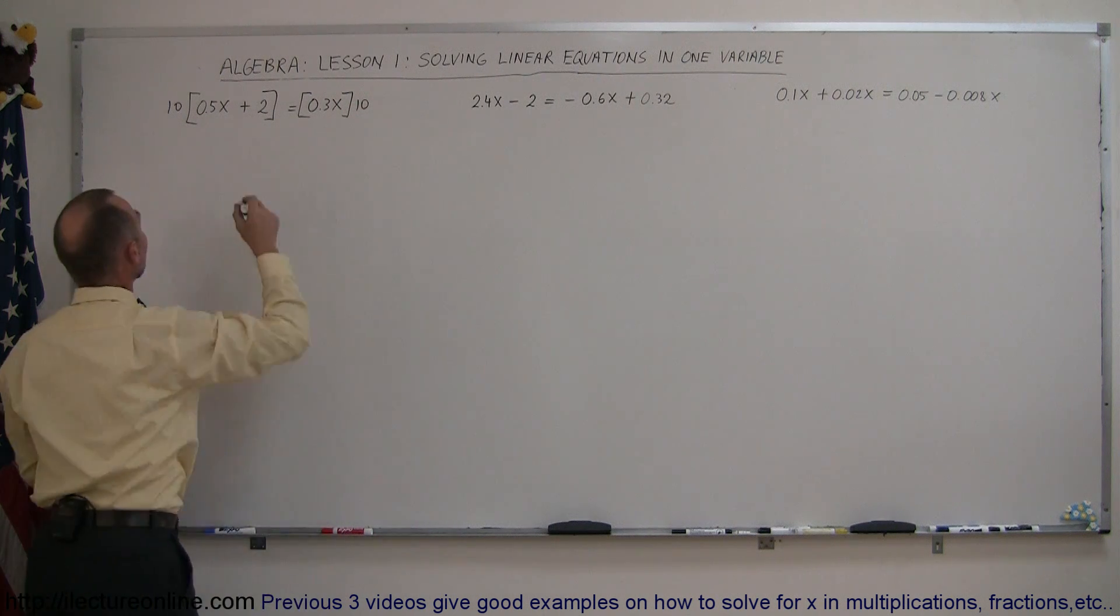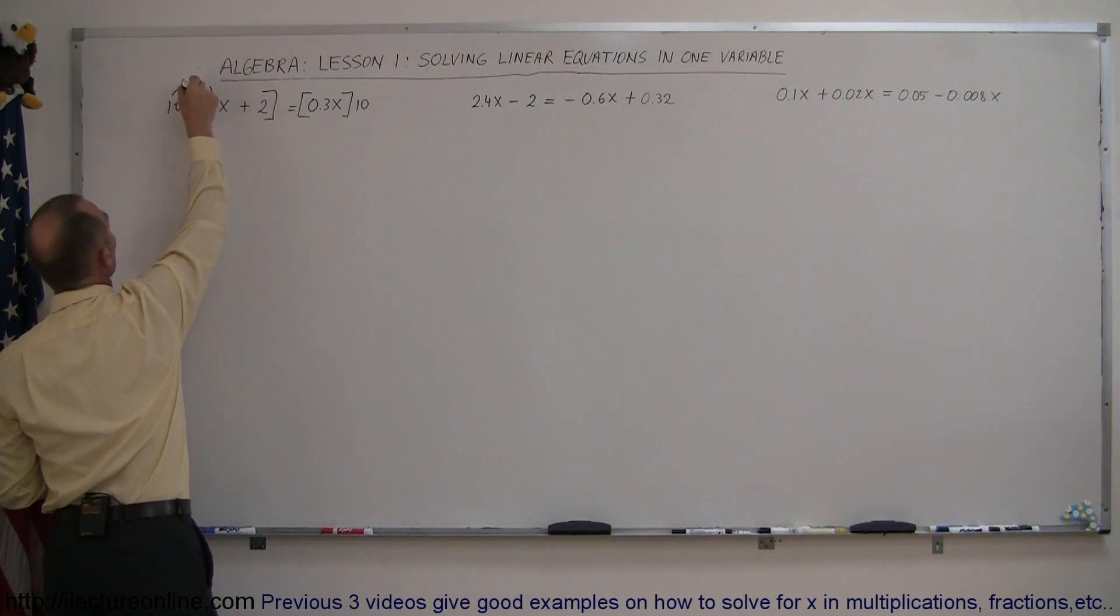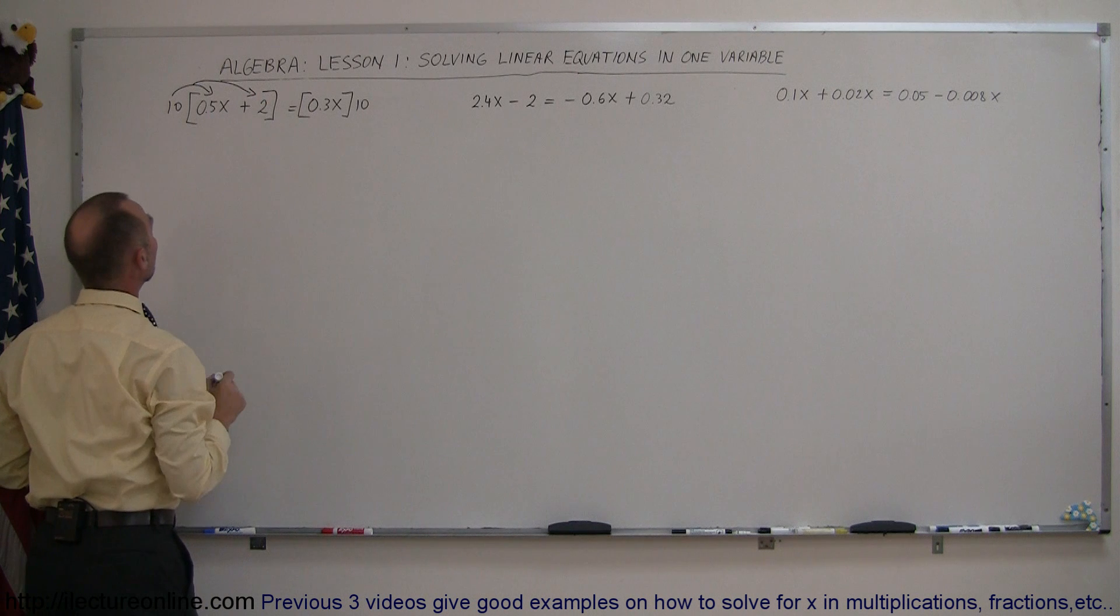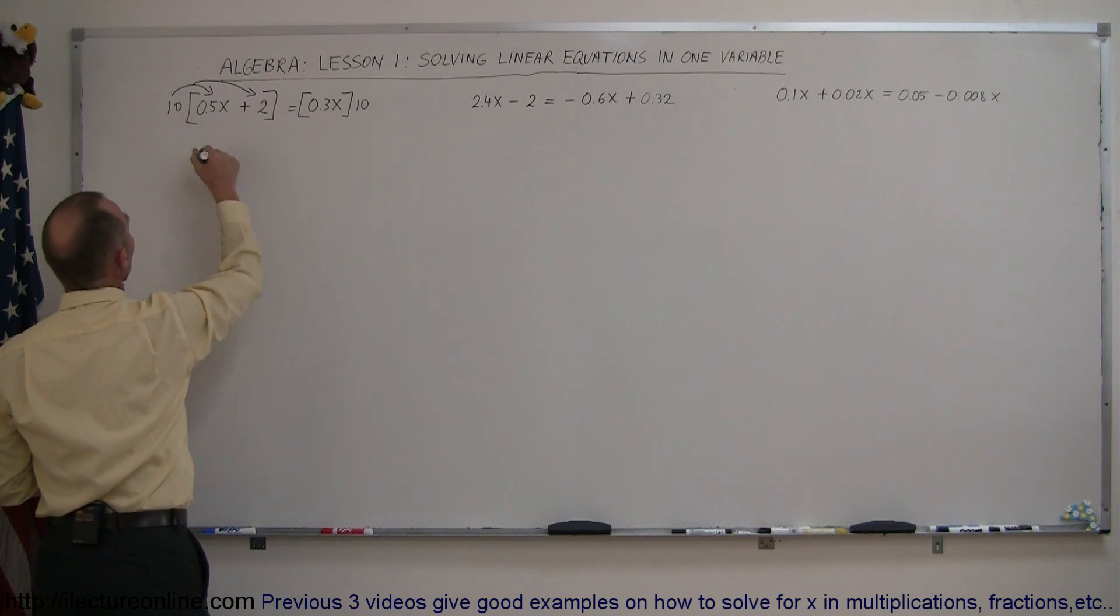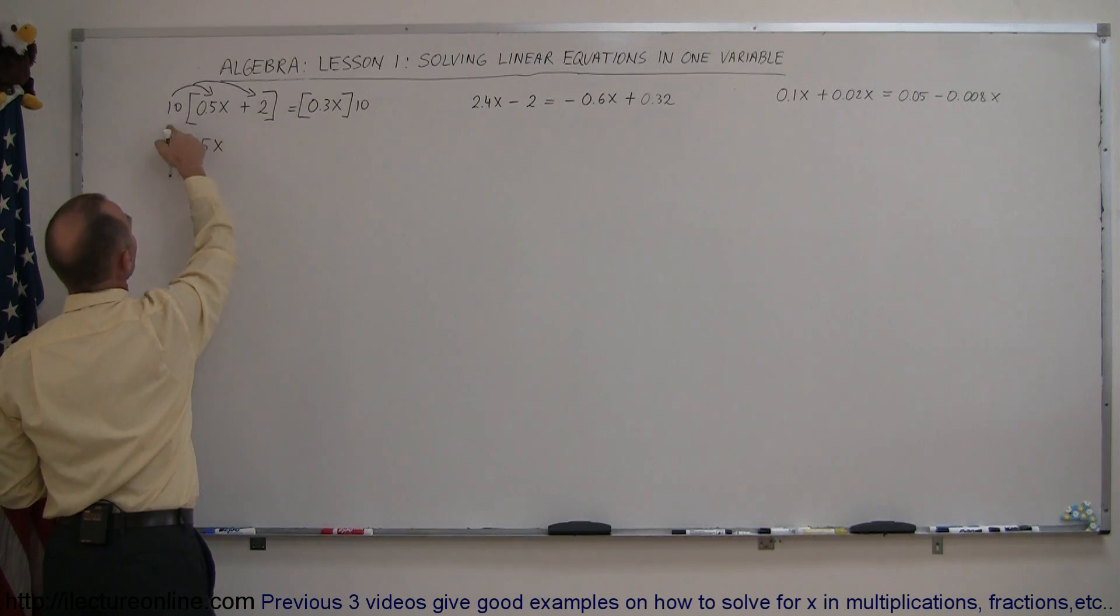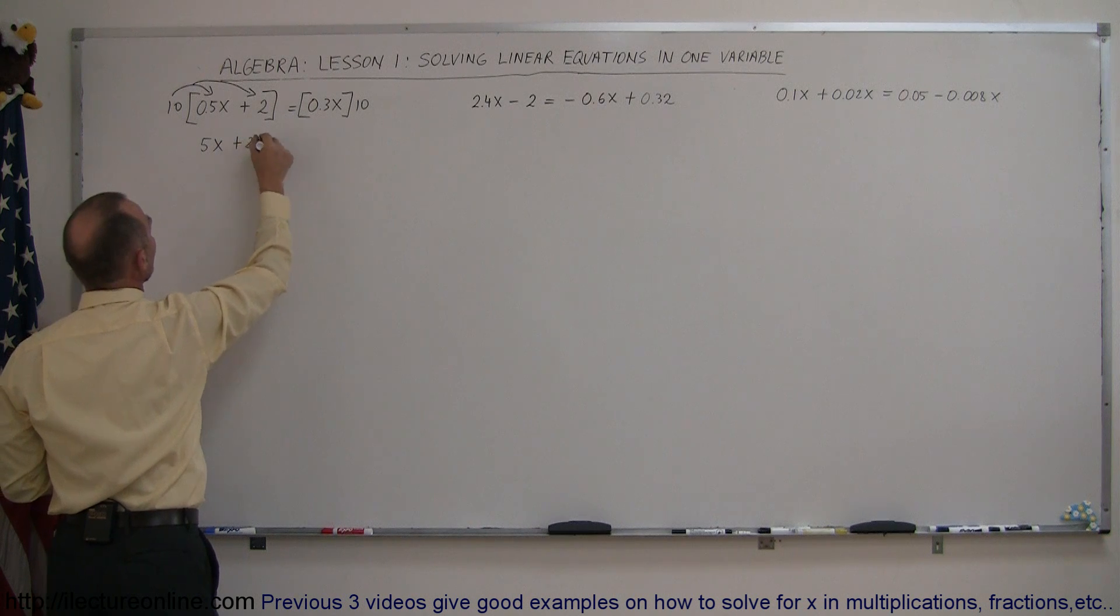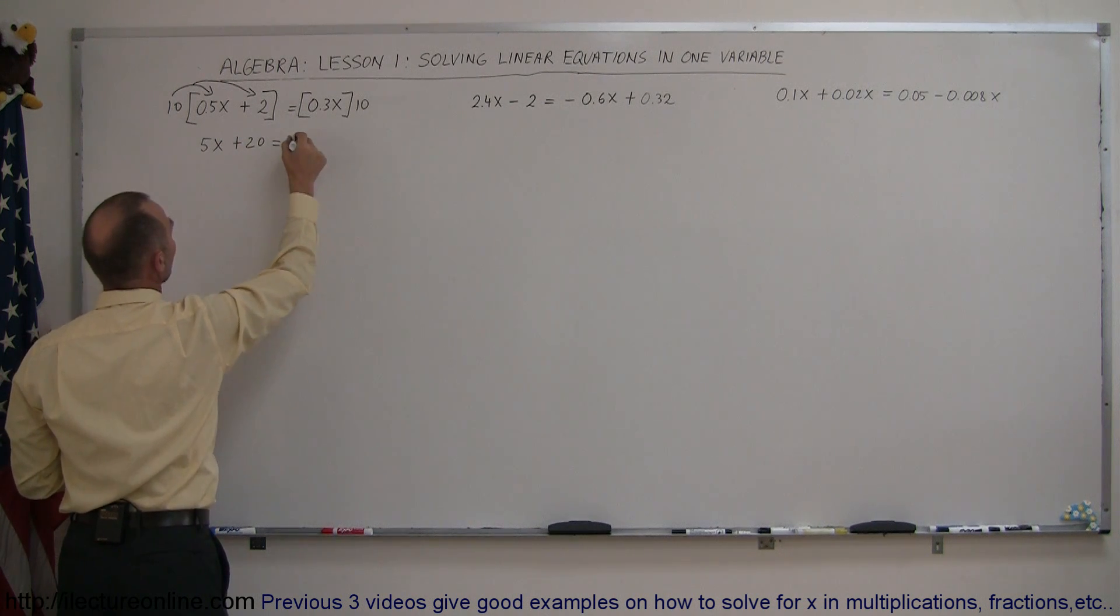So when we do that, the 10 will distribute over the 0.5x and with the 2. So 10 times 0.5 gives you 5x, and 10 times 2 gives you plus 20, equals 10 times 0.3x gives you 3x.